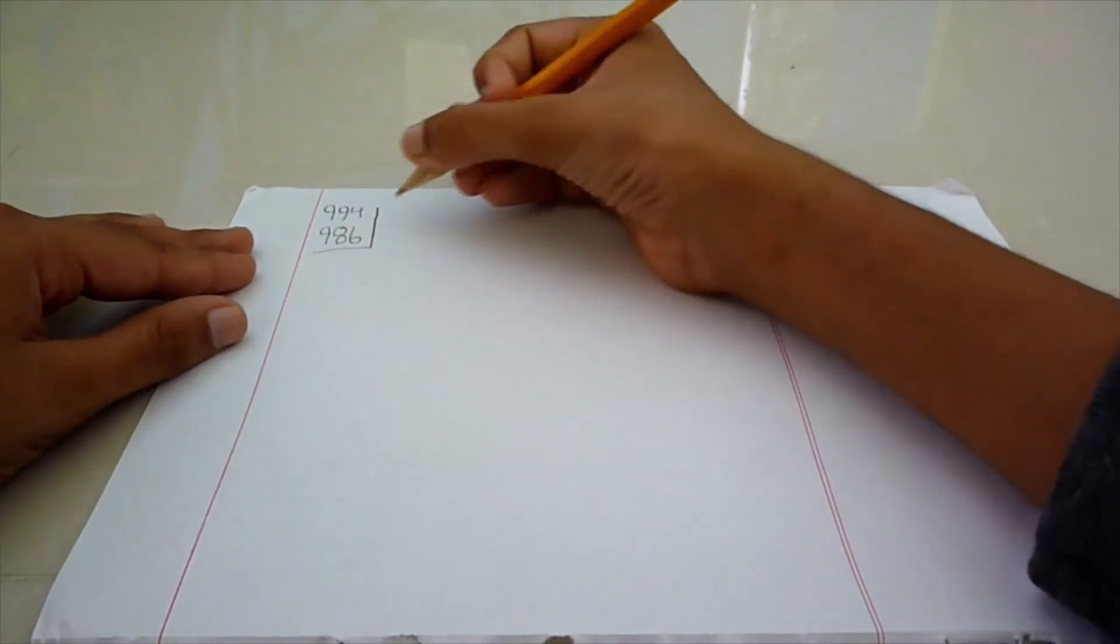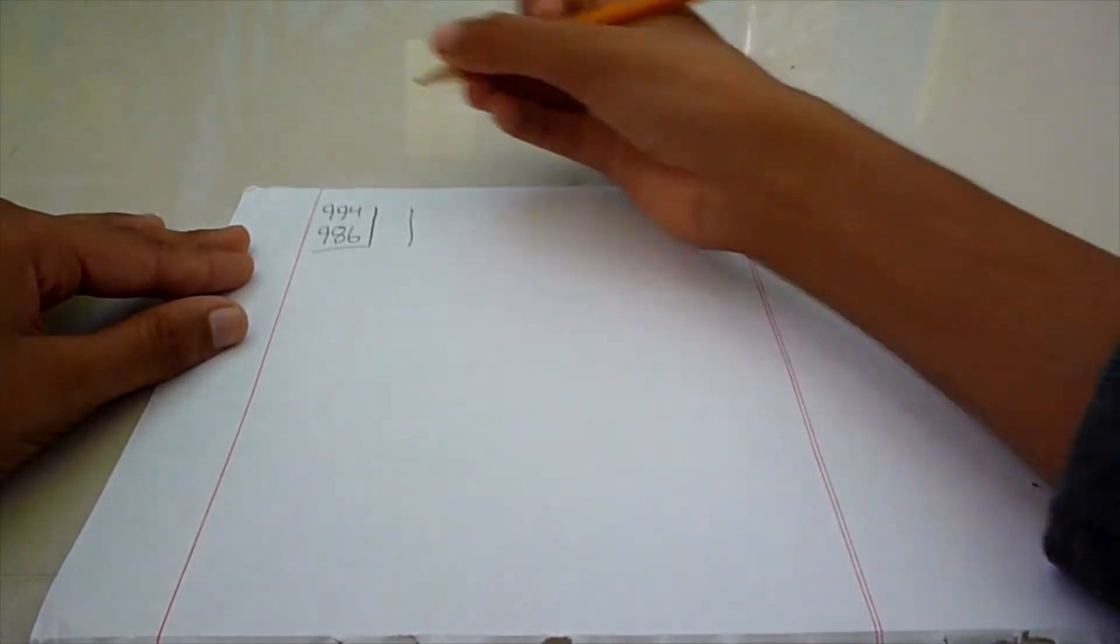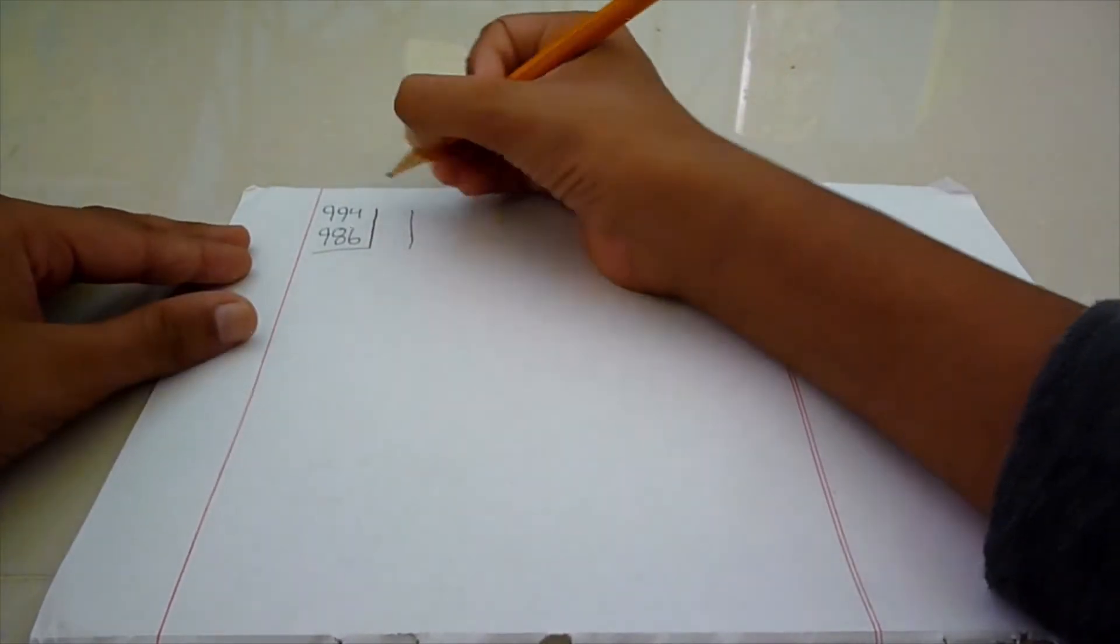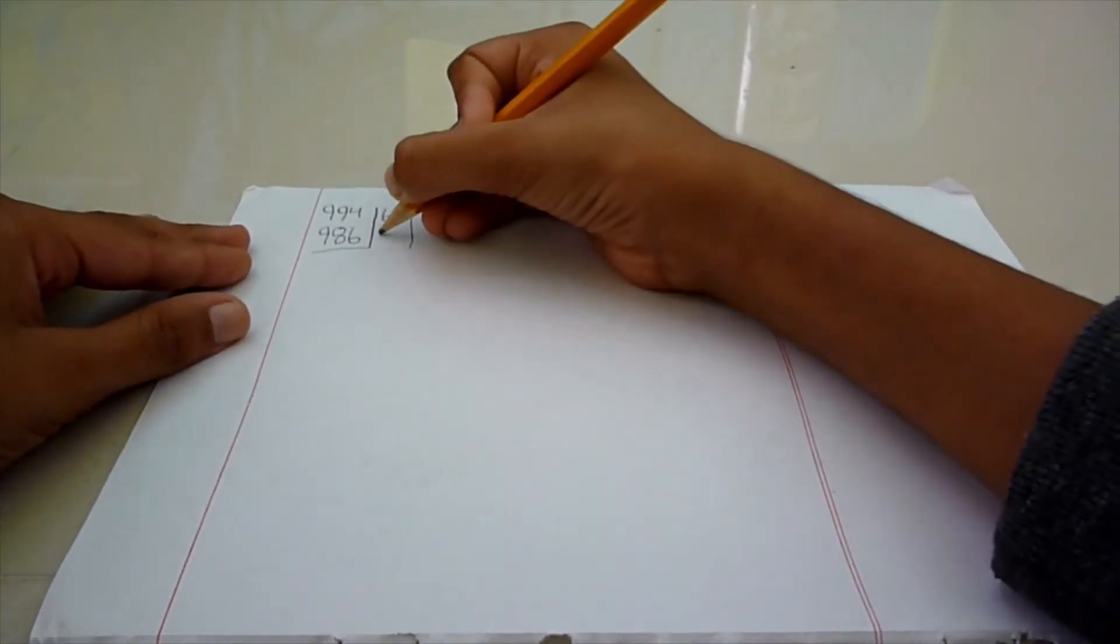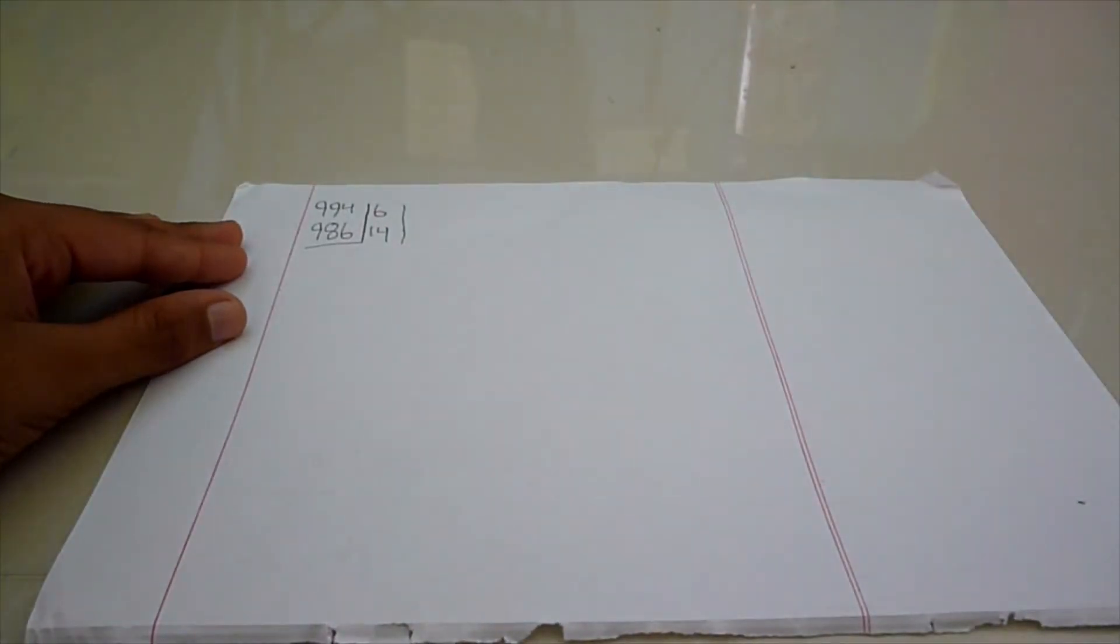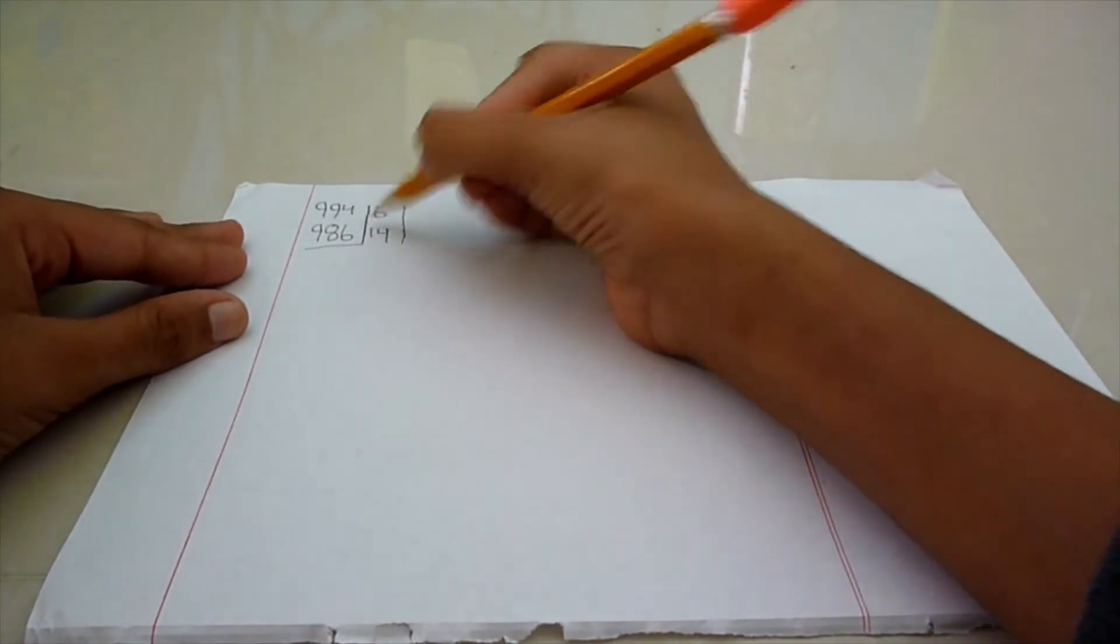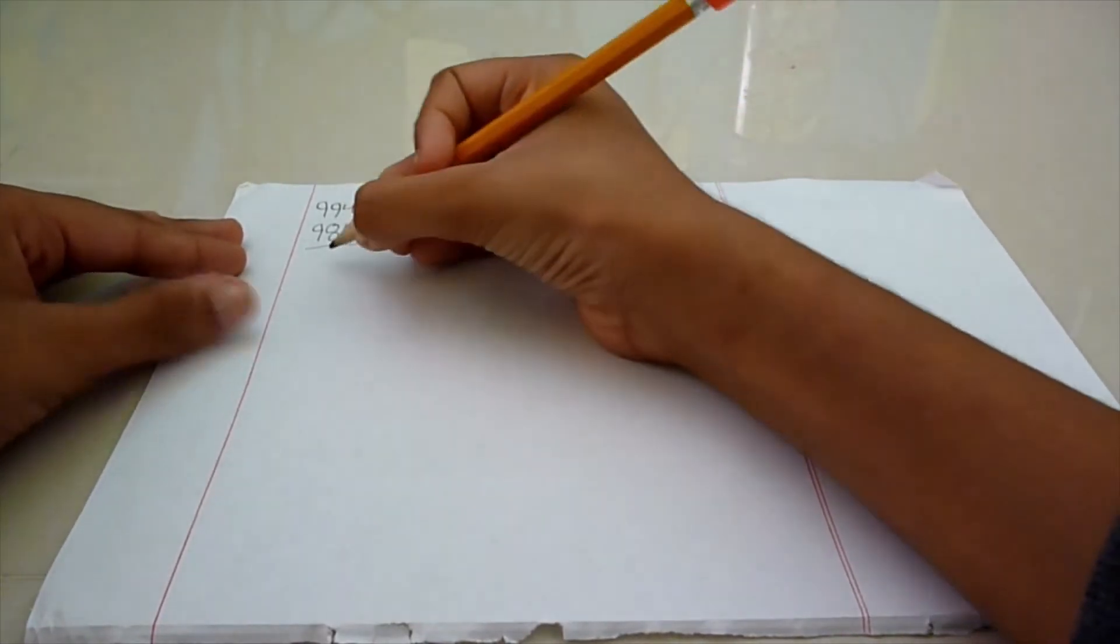Now, we have to subtract both of these numbers from 1000, which will be 6 and 14. Now, we have to subtract 994 from 14, which will be 980.